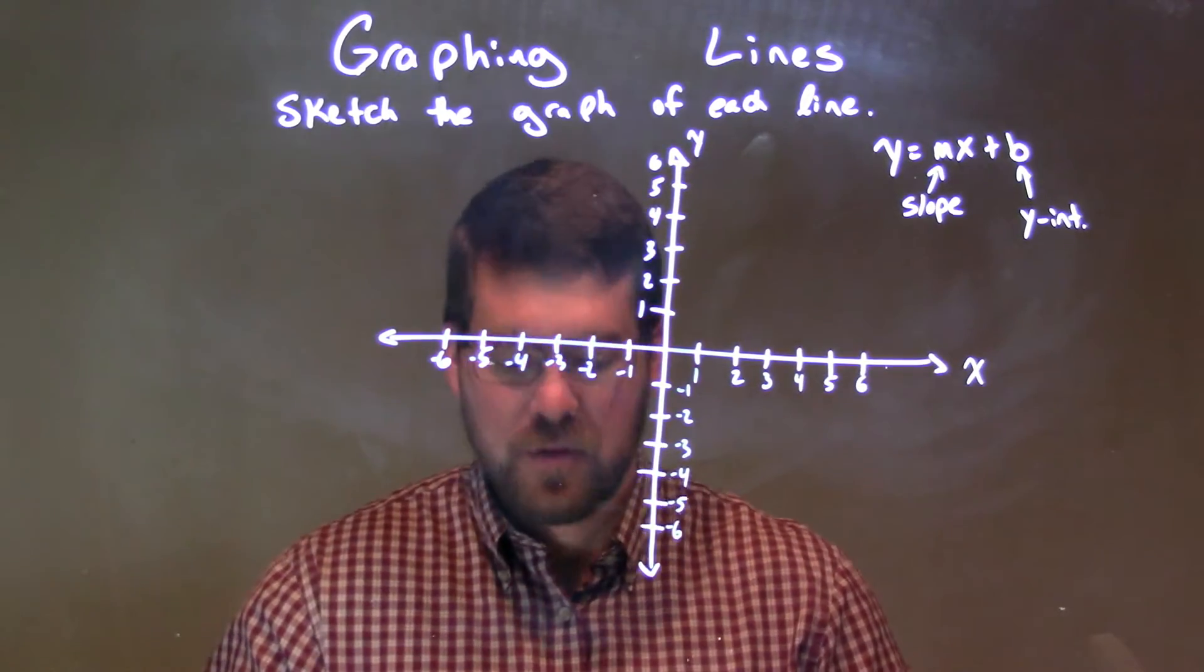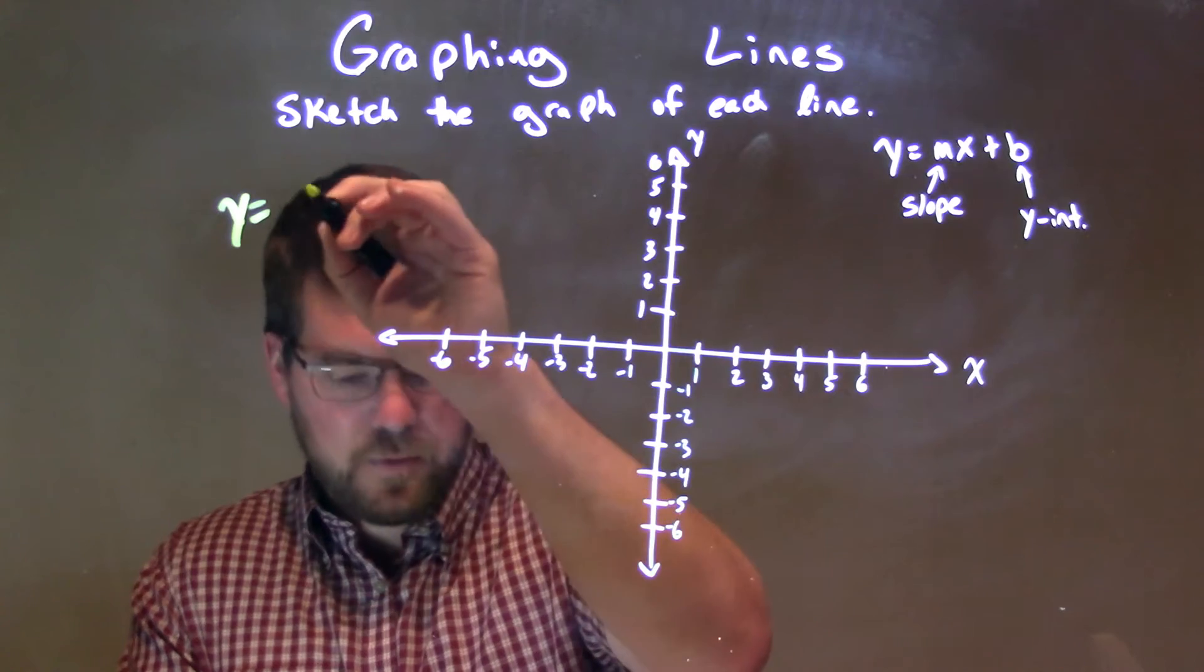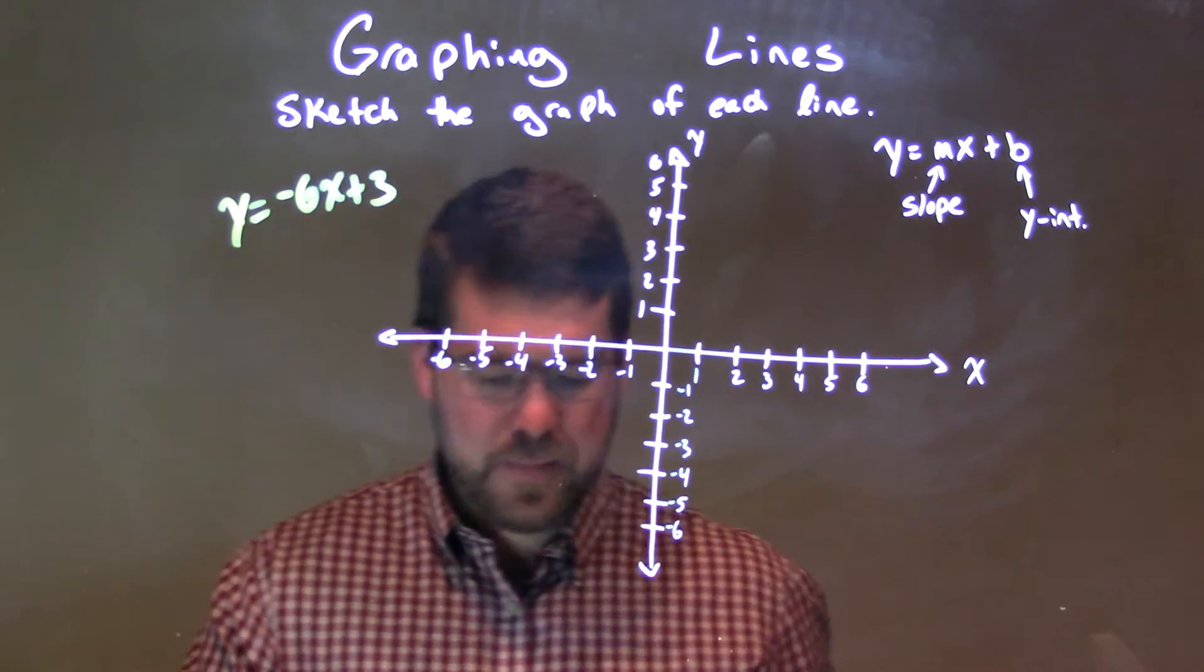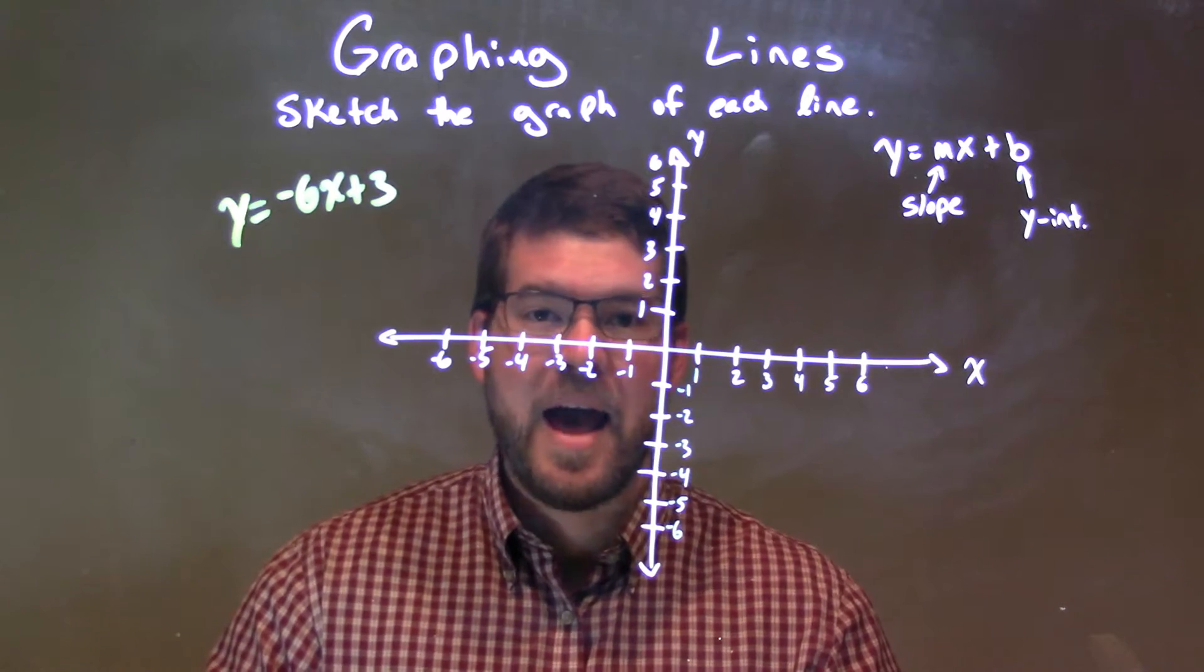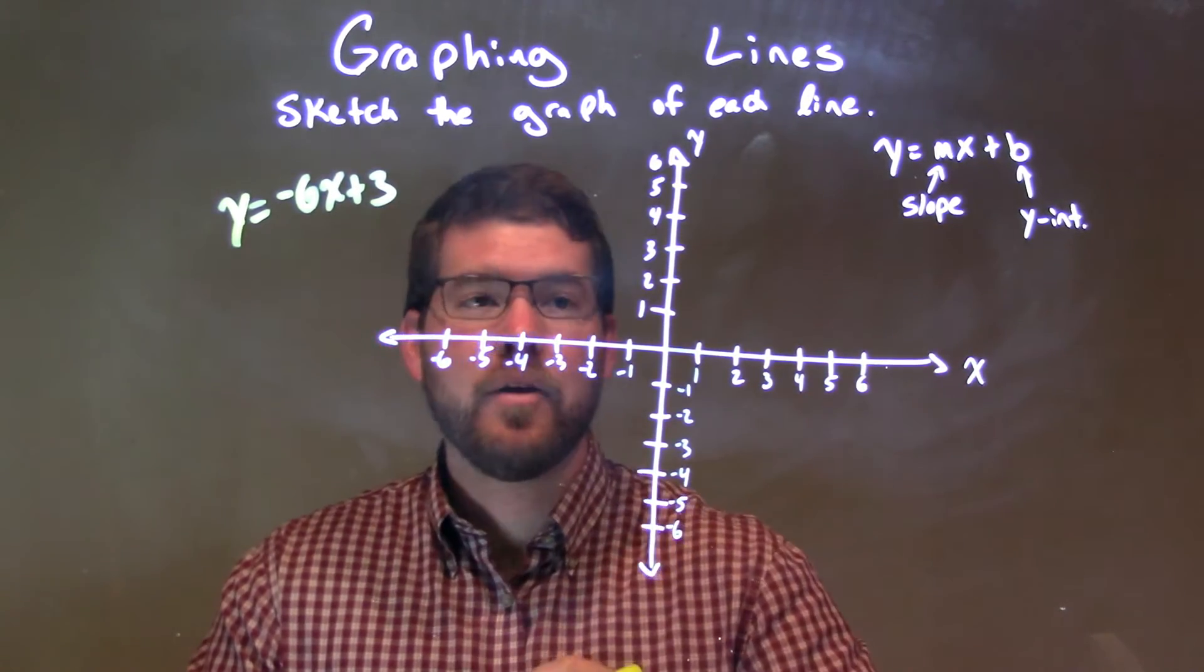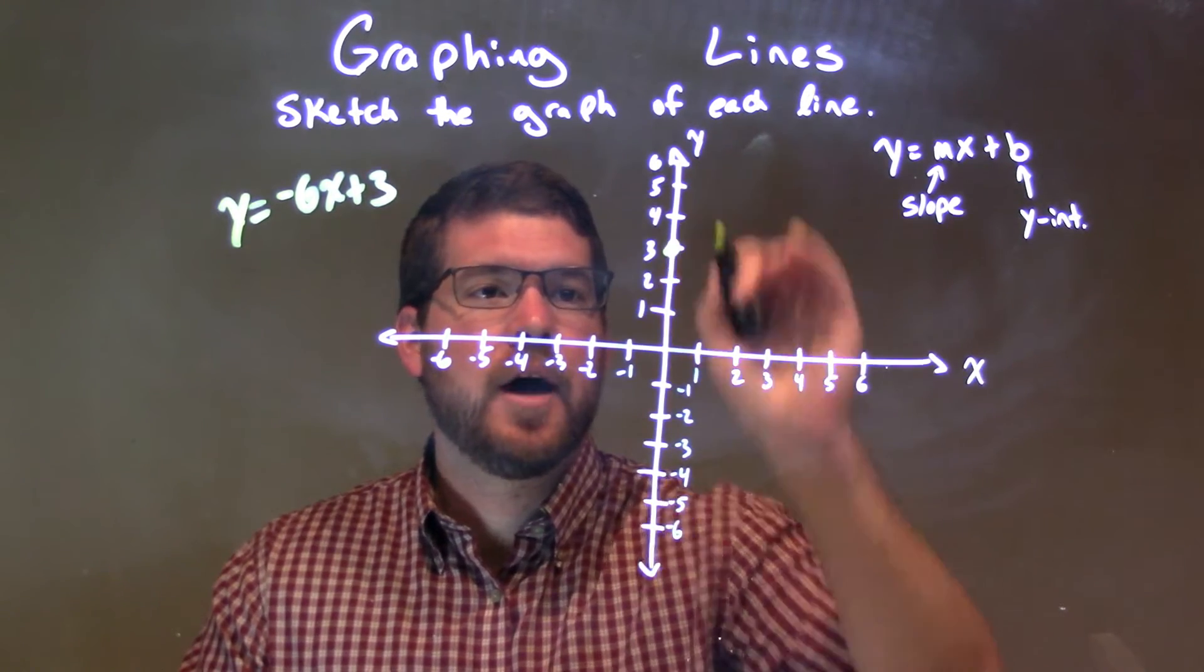We're going to sketch the graph of this line. If I was given this equation, y equals negative 6x plus 3, the first thing we're looking at is our y-intercept, our b-value right here. Y-intercept is 3. So, on the y-axis, I'm going to put a dot right there, 3.